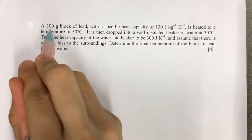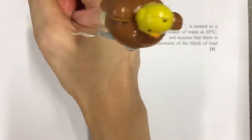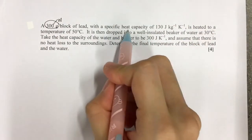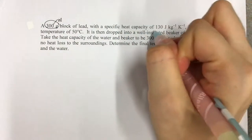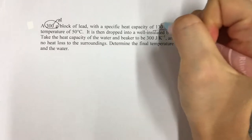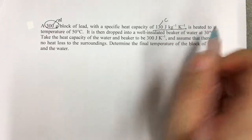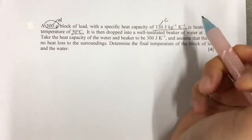For example, a 300g block of lead - this will be the mass, M. With a specific heat capacity of 130 J per kg per Kelvin, so this is your C. Specific heat capacity is heated to a temperature of 50 degrees Celsius.